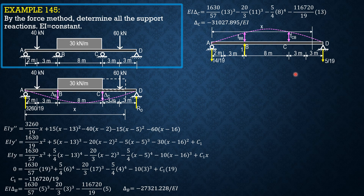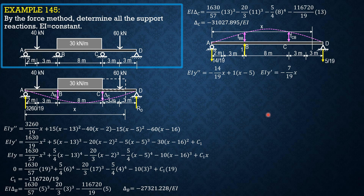By double integration again, let's solve for fBB and fCB due to this unit upward load. The equation is EI·y'' equals negative (14/19)x plus 1 times (x minus 5). Integrating, EI·y' equals negative (7/19)x² plus (1/2)(x minus 5)² plus C₃. There is C₃ but no C₄ because A is a support. Then EI·y equals negative (7/57)x³ plus (1/6)(x minus 5)³ plus C₃·x.